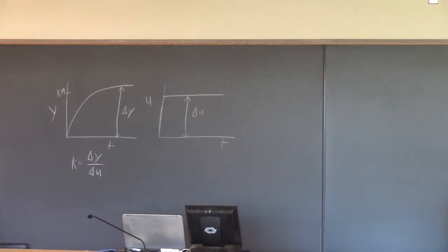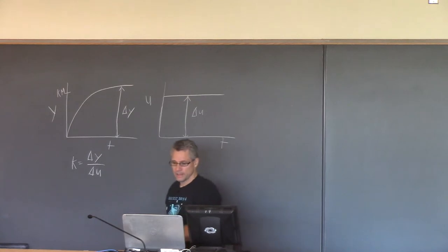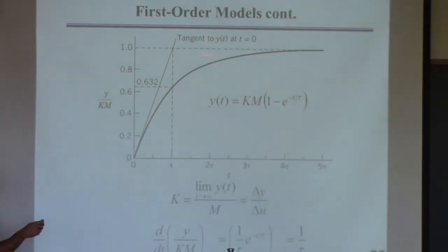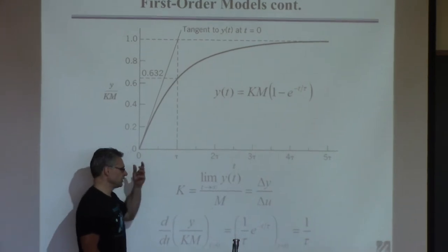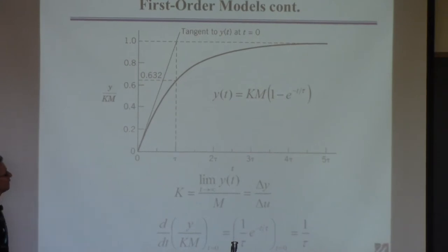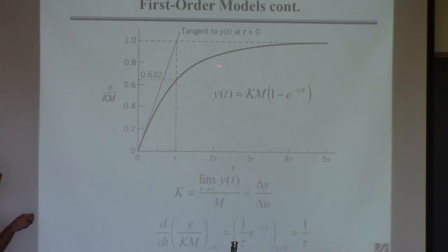There are two ways to find the time constant. The bad way involves finding a tangent, which we don't like. The more sensible way: if you evaluate the solution of the first-order equation for t equals tau, you'll find that the output reaches 63% of its final value when t equals tau. So if you can find when the output has reached 63% of its final value, you can conclude that time is tau. Just look at the response curve, find when it's 63% complete, and that time is tau.